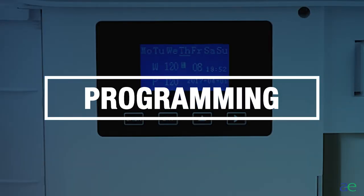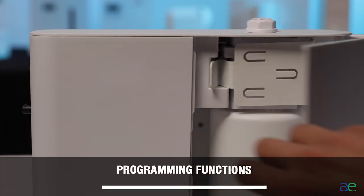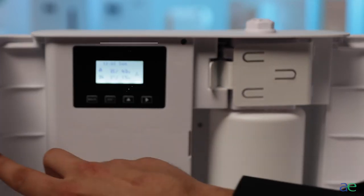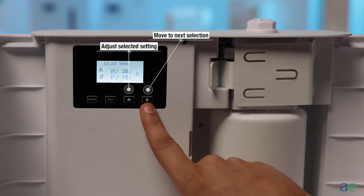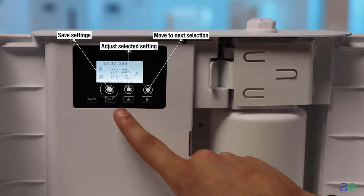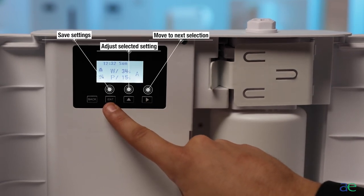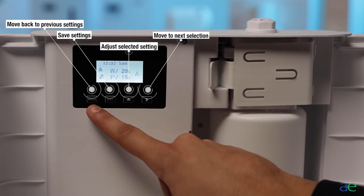Programming your AE 3500. Here are some of the functions for your diffuser. The up arrow is to change each individual setting. The right arrow is to move over to the next selection. The enter button is to save your settings or select the day of the week you wish to program. The back button is to move back to the previous setting.